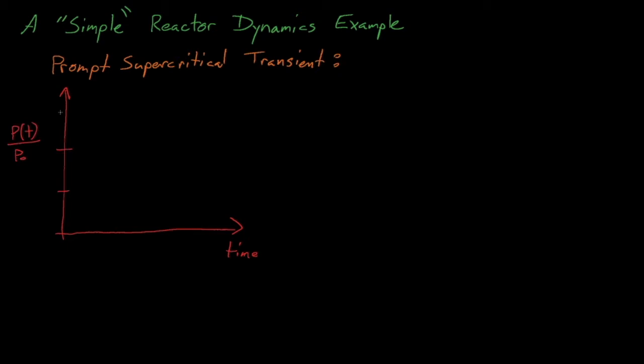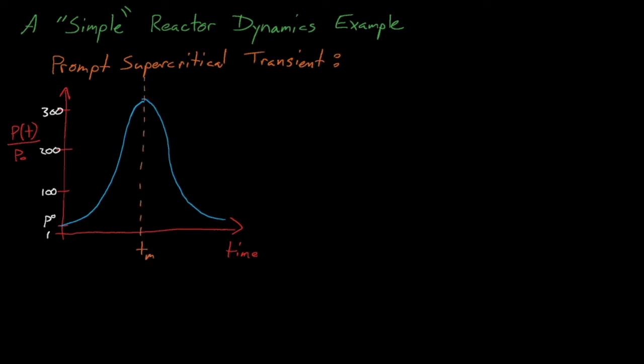During a prompt supercritical transient, a reactor's power tends to follow a Gaussian-like shape. We have an initial jump in the power, but eventually feedback kicks in and lowers the reactivity of the system, which causes the power to stop increasing and to peak at some maximum P_m at time T_m. The system continues to heat up after this peak, causing the reactivity to decrease further and the power to drop back down, eventually approaching some new steady-state asymptotic power level.